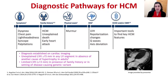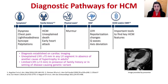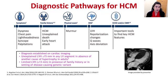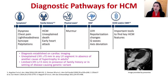Some people are detected to have a murmur on physical exam, which leads to further investigation. Additional abnormalities found on EKG include suspected left ventricular hypertrophy, repolarization changes, axis deviation, or Q waves. Ultimately, the diagnosis is made by imaging, which involves either echocardiography or cardiac MRI — both important tools in identifying key features of hypertrophic cardiomyopathy.